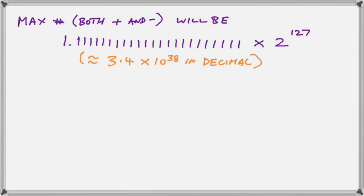What about the maximum number that we can represent? Whether it's positive or negative, it's going to be the same magnitude, because the sign is only stored as a single bit — that bit is 1 when negative and 0 when positive. This mechanism is called sign-magnitude storage. So if we have 1 followed by a mantissa of 23 bits all 1s, that will be the maximum number, and we have 2 to the 127th power. That is approximately 3.4 × 10 to the 38th in decimal — quite a large number, but certainly nowhere near infinity.